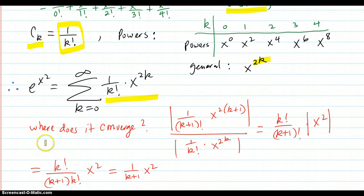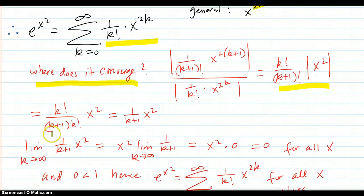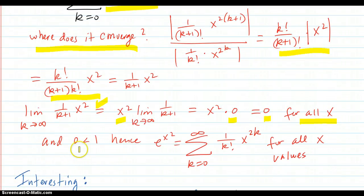Another question you could ask is, where does it converge? So you do your ratio test. It simplifies down to this. It simplifies down to this. Then you do your limit. Factor out the x. K's are moving. It goes to 0, which is equal to 0 for all x. And 0 is less than 1. Hence, this equals this series for all x values.